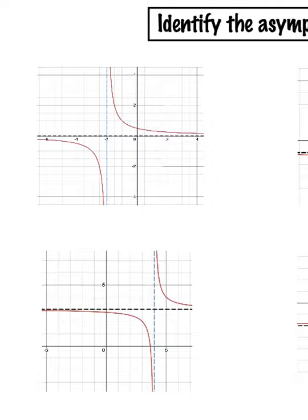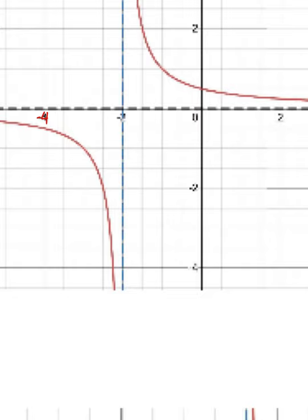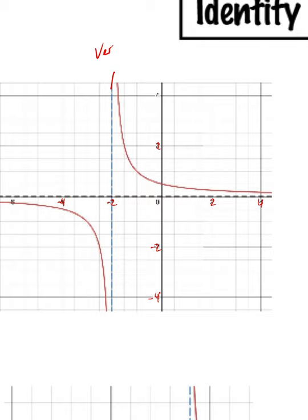Looking at identifying the asymptotes on a graph: this is negative 4 and negative 2 and 2 and 4 on each axis. The blue line represents a vertical asymptote. What's constant about that vertical asymptote is that x is always negative 2 — so that's x equals negative 2. The horizontal asymptote is right on the axis, so that horizontal asymptote would be y equals 0.